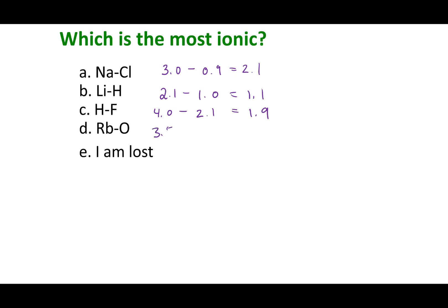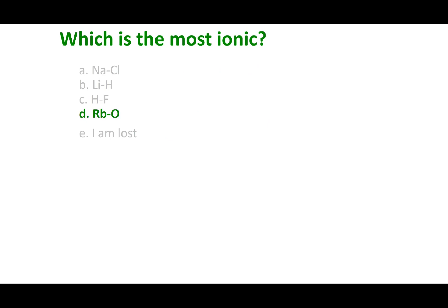And finally, rubidium oxide, 3.5 minus 0.8, which gives us a value of 2.7. So because the last one has the highest electronegativity difference, it is considered the most ionic compound. Well, I hope that made sense, Chem 1A, and remember to stay safe.